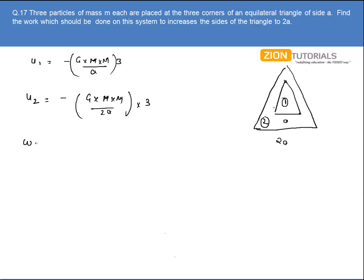The work done will be equal to the change in potential energy. That can be written as minus G times M times M divided by 2A times three. This comes out to be minus G times M times M times three divided by 2A.